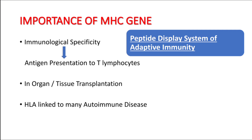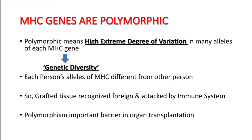The most important function of MHC genes is antigen presentation to the T lymphocyte — it is the peptide display system of our adaptive immunity. Another importance of MHC genes is in organ or tissue transplantation. Additionally, HLA molecules are linked to many autoimmune diseases as well. These three are the main importances of MHC molecules.